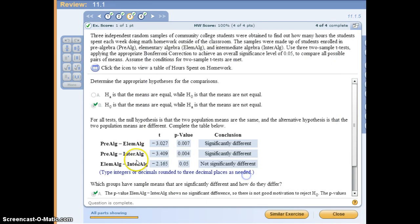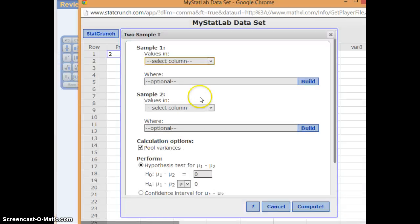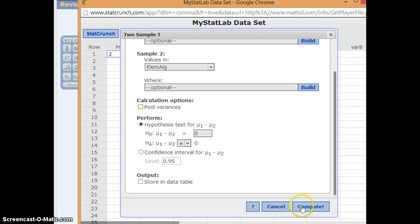Now they want us to compare pre and elementary. Click pre and L. Don't pool. This is correct.